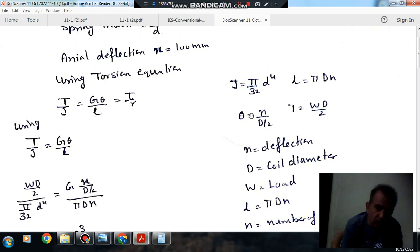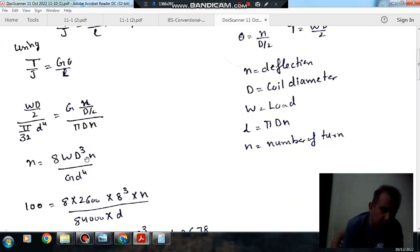Theta is the angular twist, and angular twist is given by deflection X divided by D by 2. And torque applied is given by W times D by 2, where W is load applied and D is mean coil diameter. So now putting these values, we can find out the deflection as 8 W D cubed n divided by G d to the fourth.